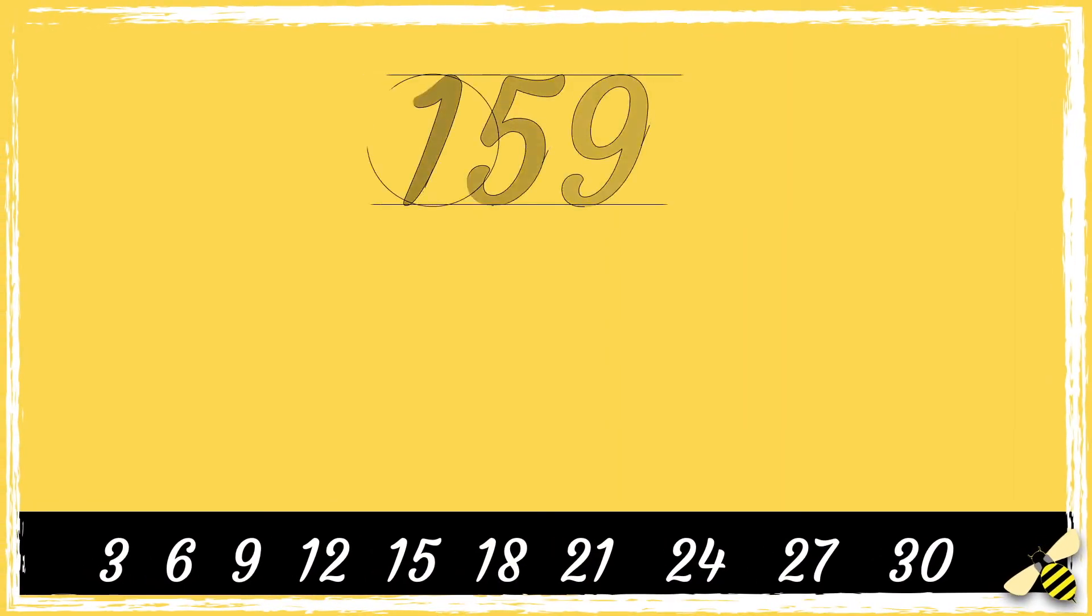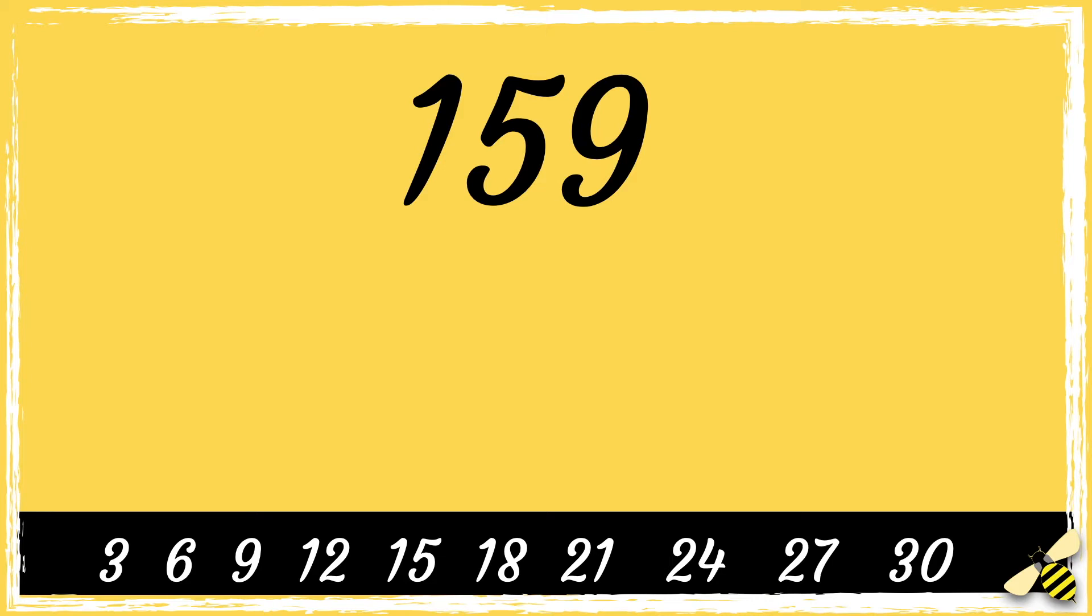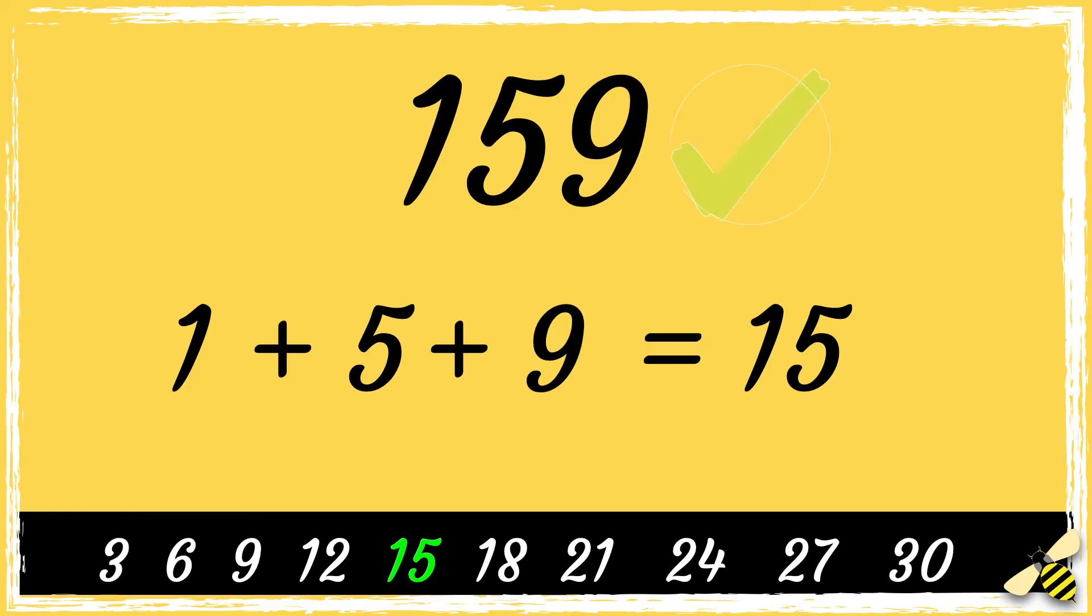Here's another one. 159. So first we add the digits. 1 add 5 add 9 equals 15. 15 is a multiple of 3, which means that 159 is divisible by 3.